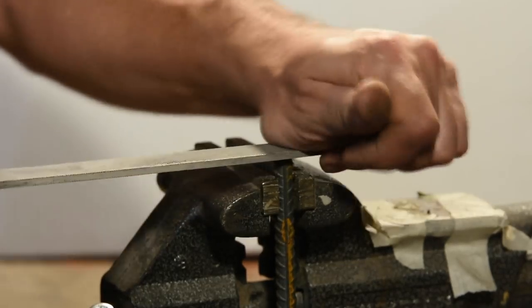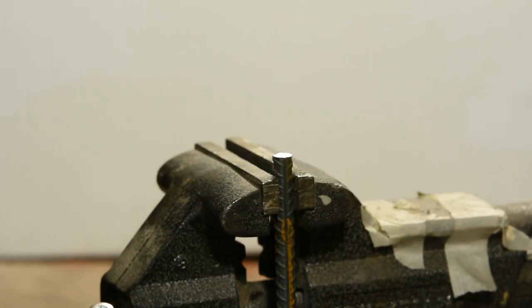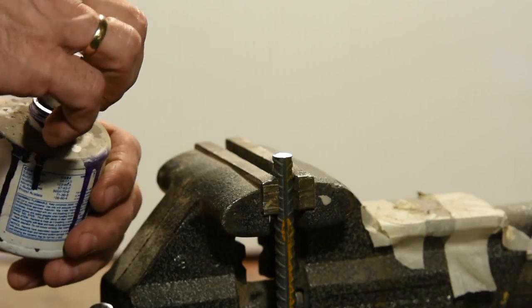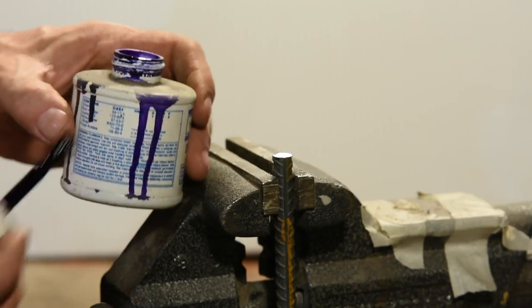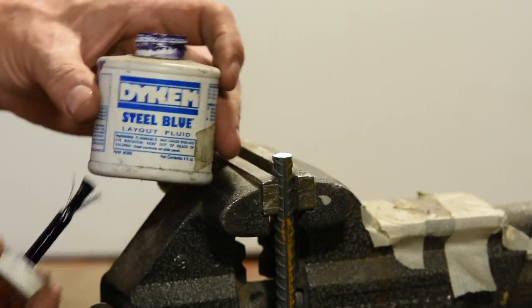Now, I'm going to gild the lily here and mark the center point using a scribe and a center square. I'll apply layout fluid, then scribe two intersecting lines.